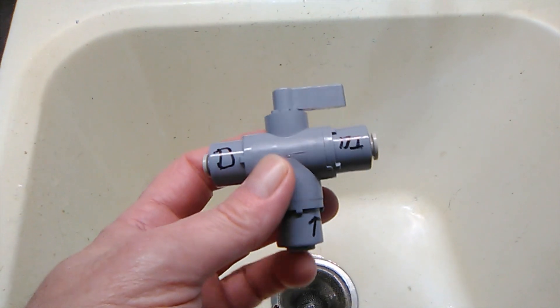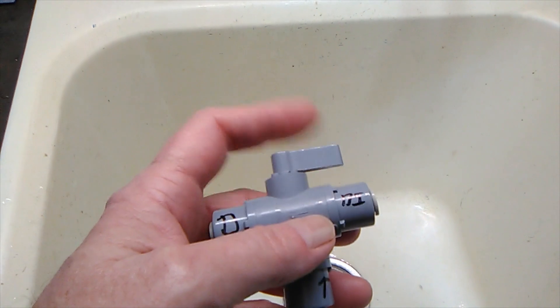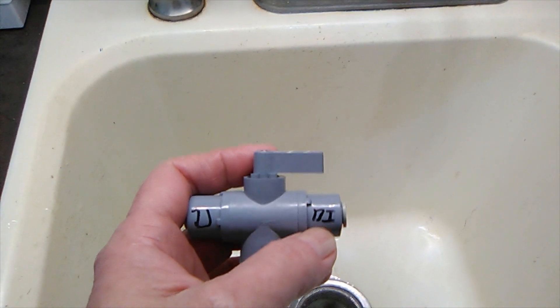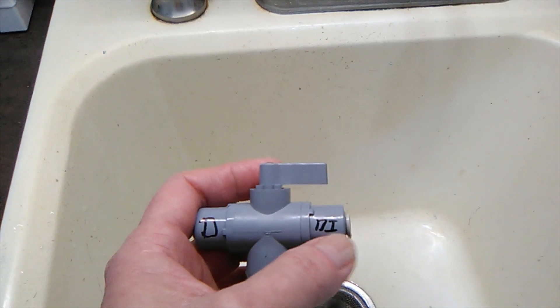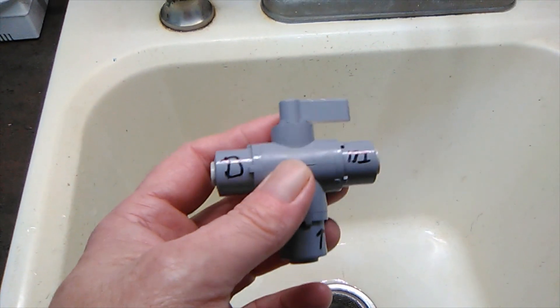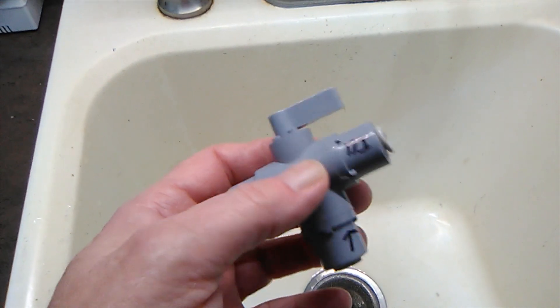So the water comes in here, and it has two outputs, and depending upon which way the valve goes, it goes to where you want. So in my case, it's going to be to the right, this will be the DI resin, and to the left will be the drain. So I'm going to install that after the TDS meter and before the DI resin, and let's see how it works.